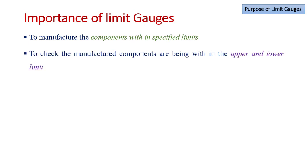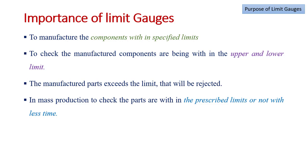Importance of the limit gauges: to manufacture components within specified limits, to check if manufactured components are within the upper and lower limit. If a part exceeds this limit it will be automatically rejected. In mass production, to check if parts are within the prescribed limit or not with less time.